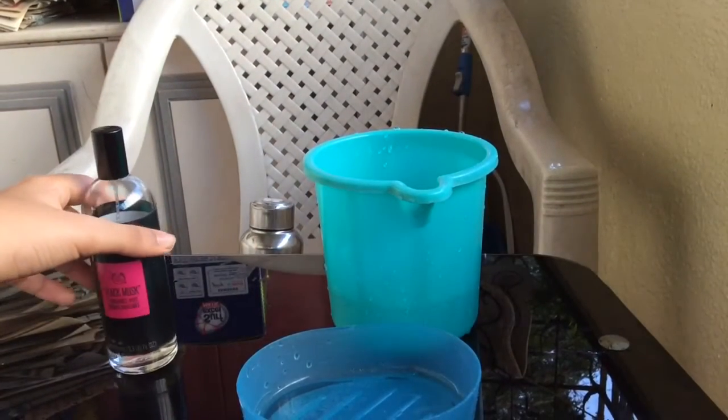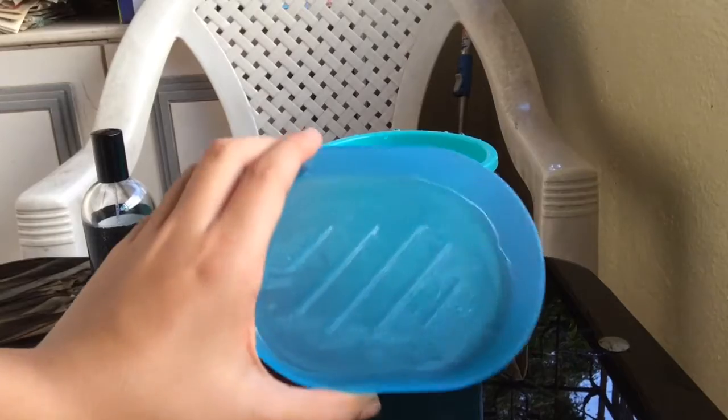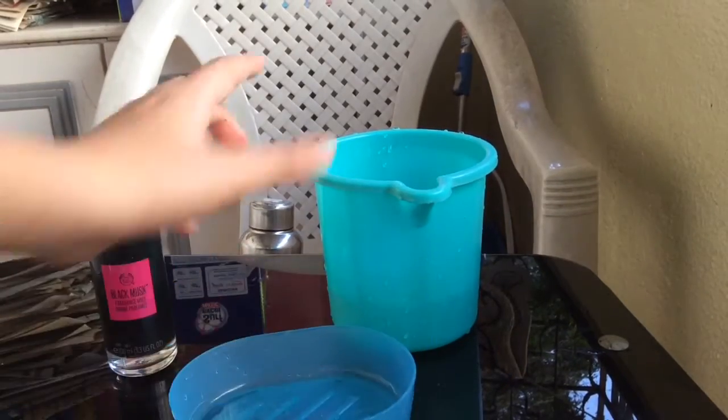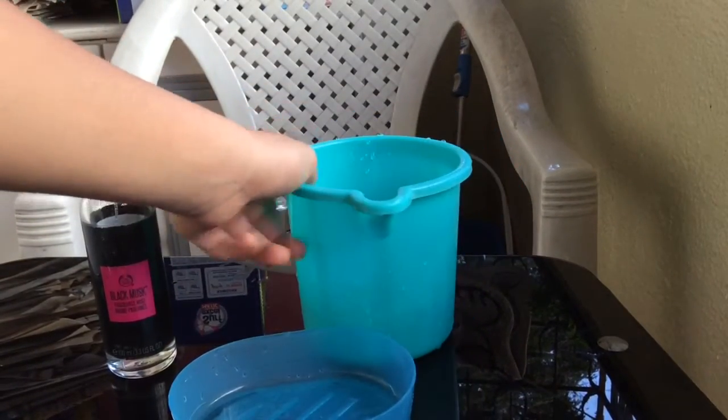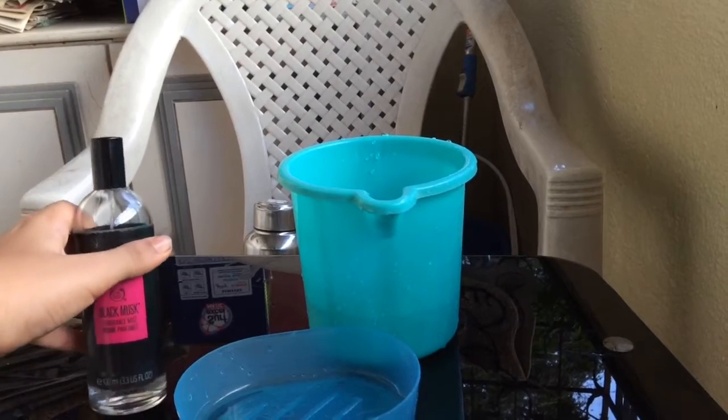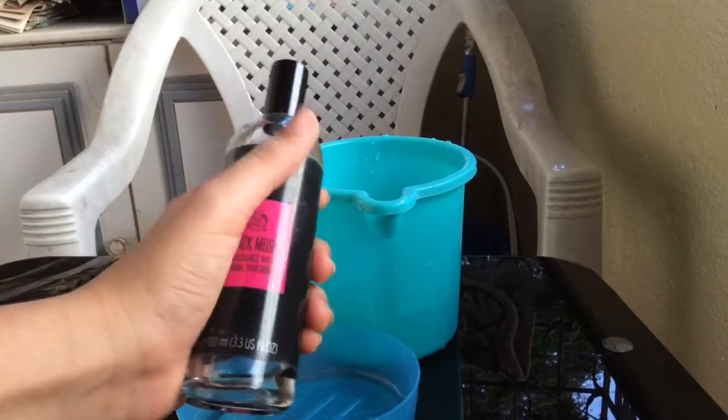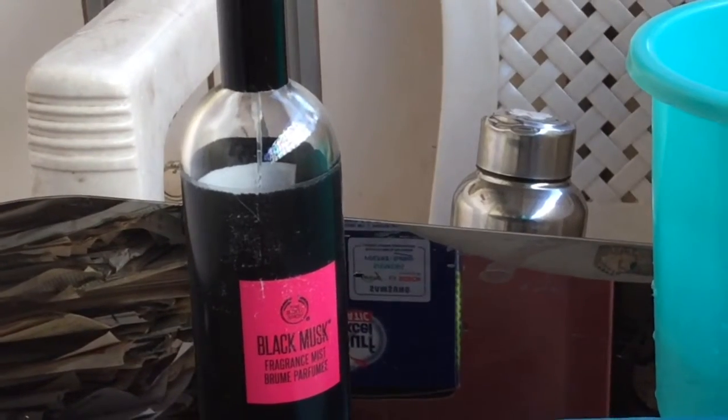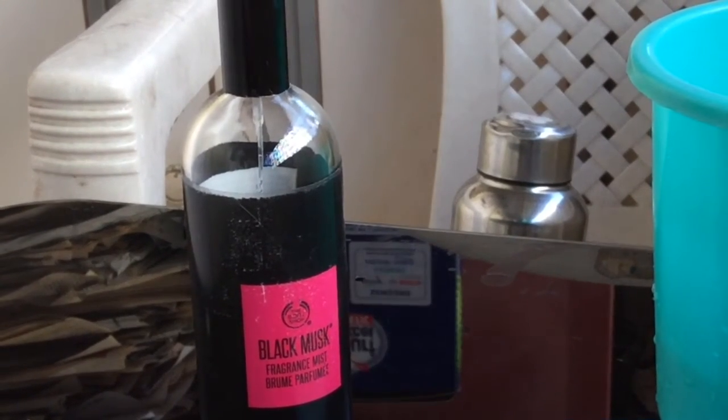So what I've got here is this soapbox thing, a mug of water, and this thing called Black Musk. No, it's not real musk. I got this from the Body Shop. It's fragrance mist, technically.